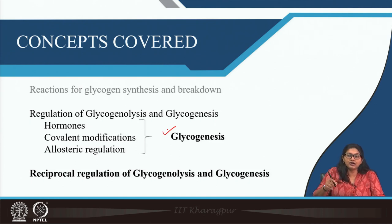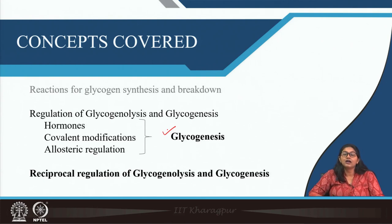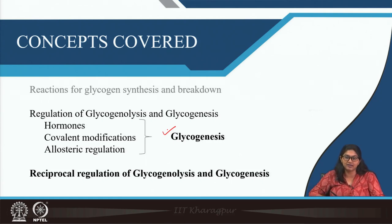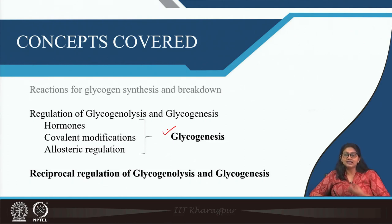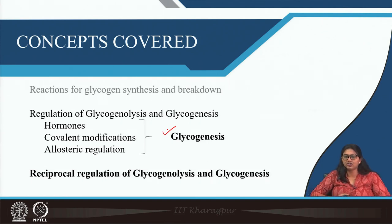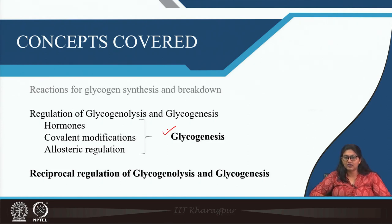To remind once again, the most important enzyme of glycogen synthesis is glycogen synthase. Regulation of glycogen synthesis is basically the regulation of the glycogen synthase enzyme. In the previous class we discussed how an enzyme can be activated following a cascade of phosphorylation and dephosphorylation — that is an example of covalent modification of enzyme activity.